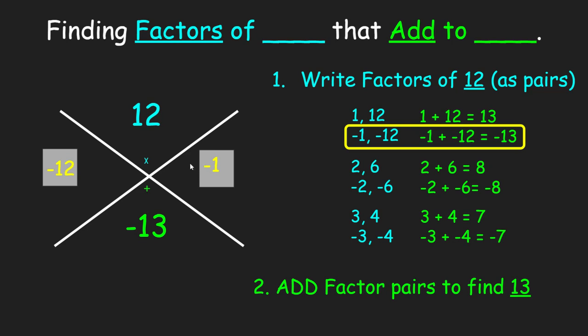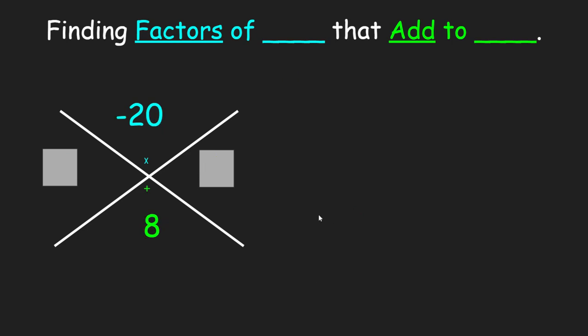Last example here. I have a negative number on top. How we get negative numbers is a negative times a positive. So when I list my factors, one of the numbers will be negative and the other pair will be positive and vice versa. So I want to make a list of factors of negative 20 that add up to 8.